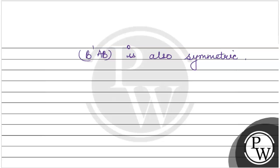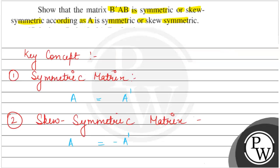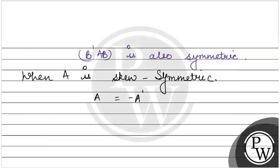Now the second condition is when A is skew-symmetric. According to the key concept for skew-symmetric, A equals negative of A transpose. So we need to prove that B'AB is skew-symmetric.